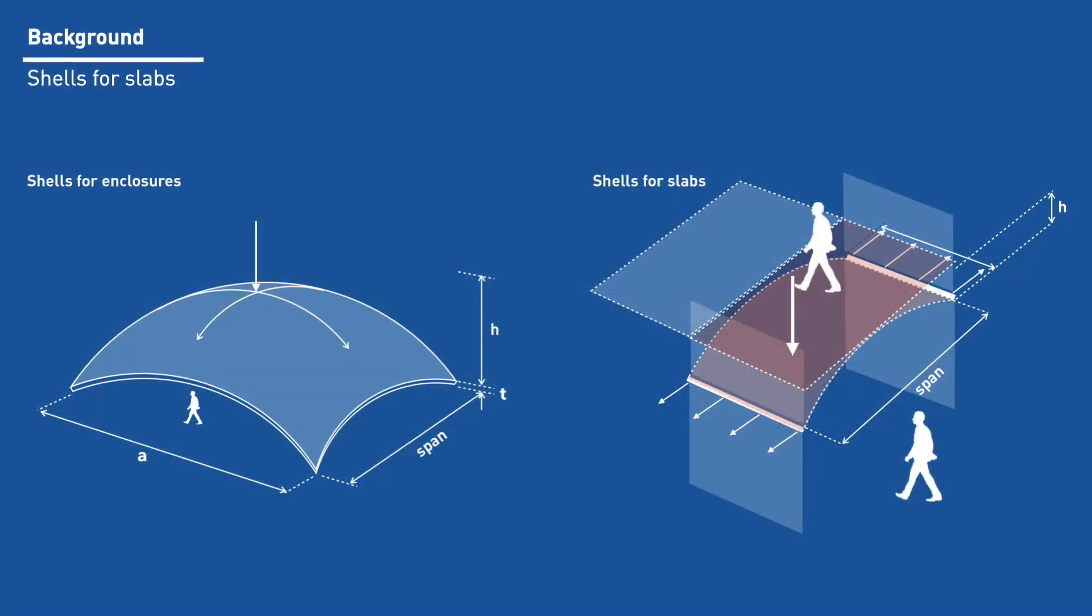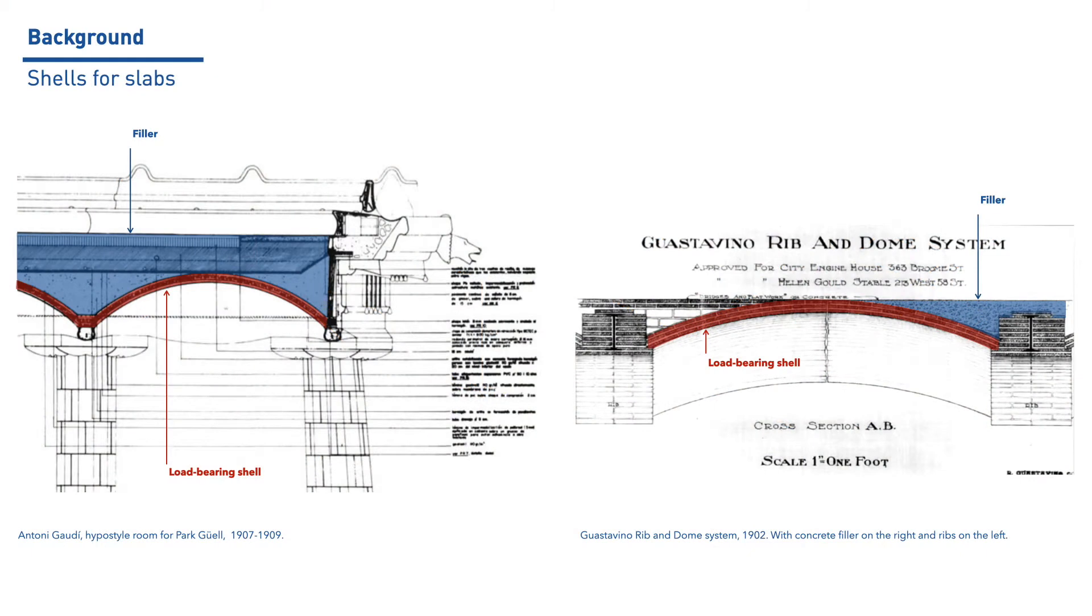The slab scenario also imposes its own design constraints. In contrast to shells for enclosure, shells for slabs must interact with many neighboring components and spaces that force them to react. First, slabs must obviously provide a flat, walkable surface, demanding third elements to mediate between the curved geometry of the shell and the horizontal plane. Traditionally, this is solved by ribs or fillers that provide both the walkable surface and the means to prevent buckling. For this research, the filler approach is used.